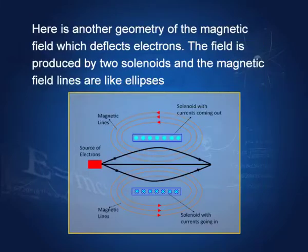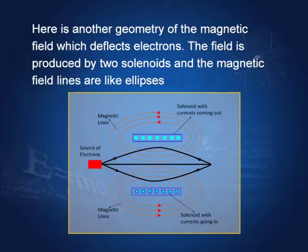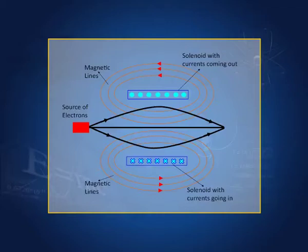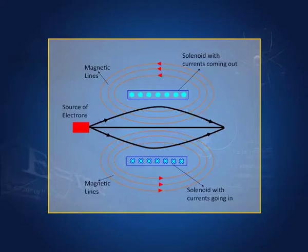Here is another geometry for the electromagnetic lens. We have two solenoids — in one the current is coming out, in the other it is going in. The magnetic field lines can be worked out for these solenoids. An electron coming out of the source interacts with this magnetic field, and the trajectories of electrons from the source converge to a focal point. This arrangement of two solenoids again acts as a lens, focusing electrons just as an ordinary lens does.